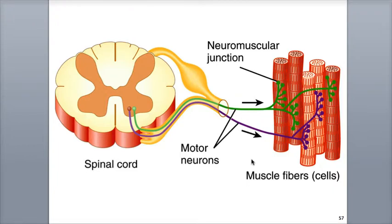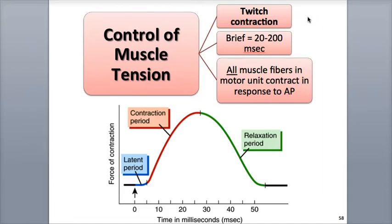When an action potential reaches the muscle fibers of a motor unit, all of the fibers within the unit contract quickly and at the same time. So, for example, in this illustration, we are looking at two motor units where we have two different motor neurons, one colored green and the other colored purple, that are forming neuromuscular junctions with different sets of muscle fibers. This simultaneous contraction of all of the muscle fibers within a muscle unit is called a twitch contraction, and it lasts for about 20 to 200 milliseconds.